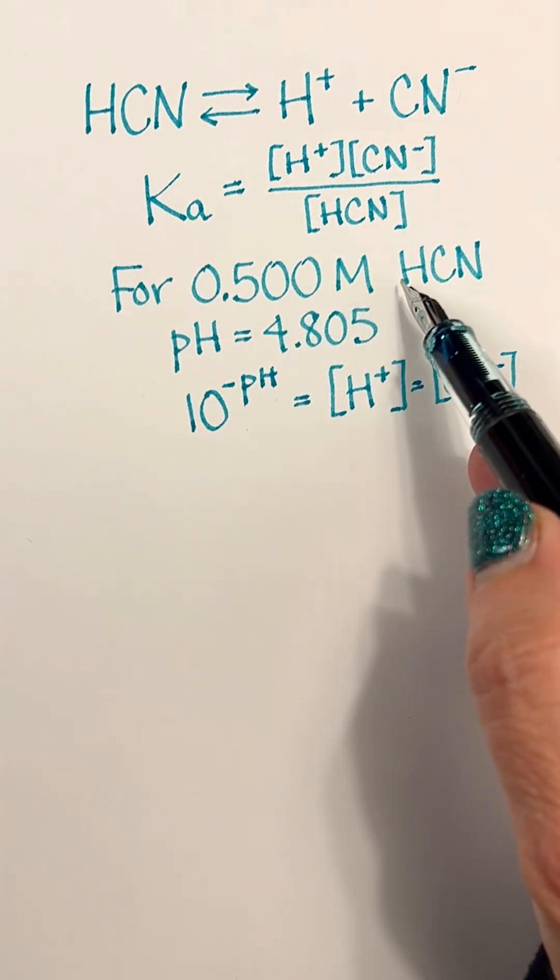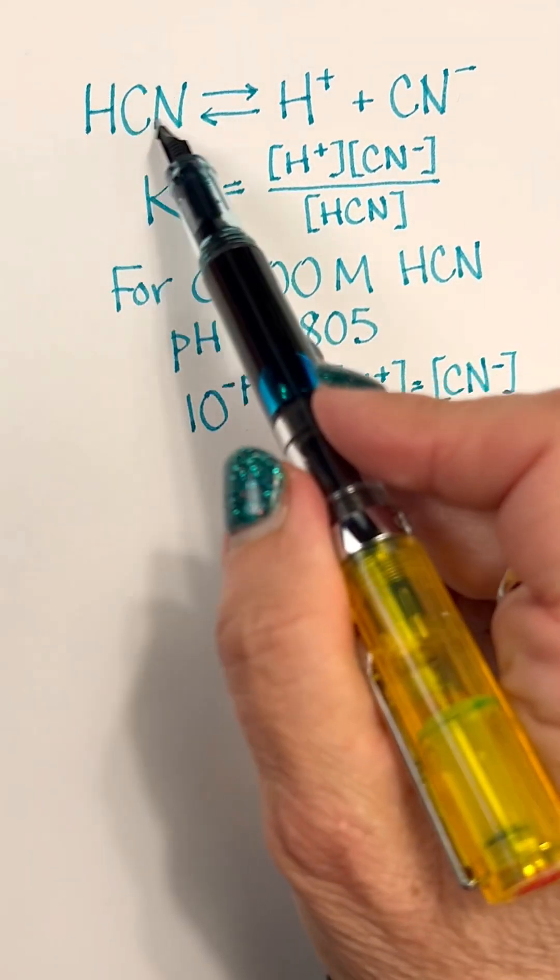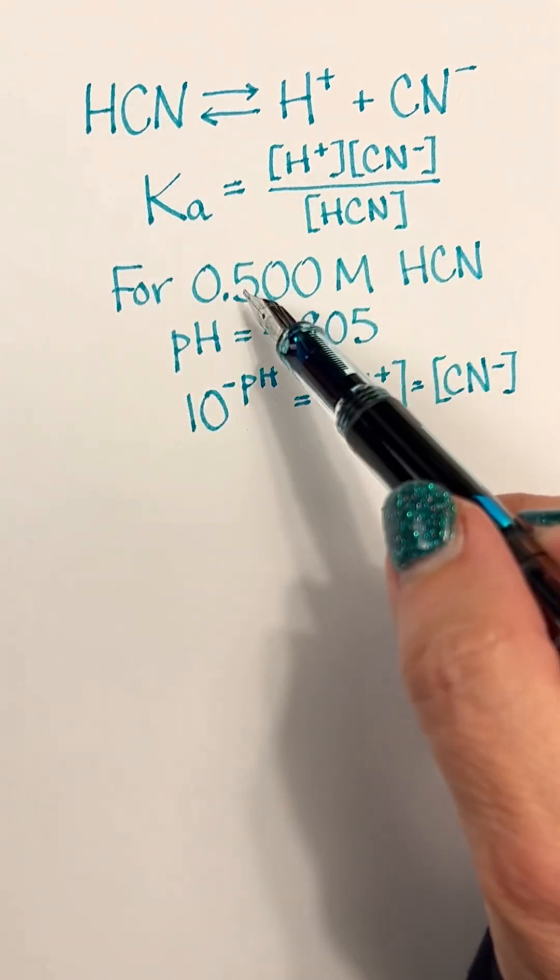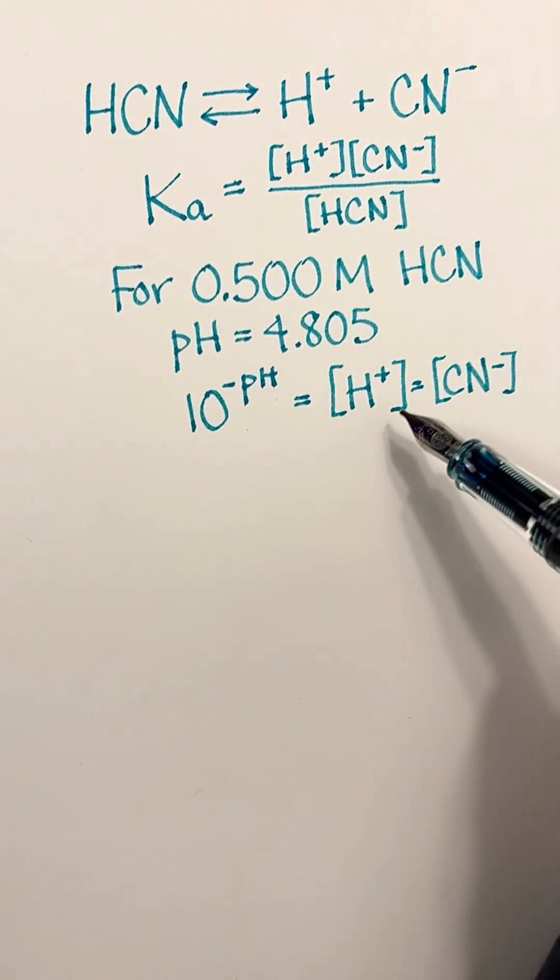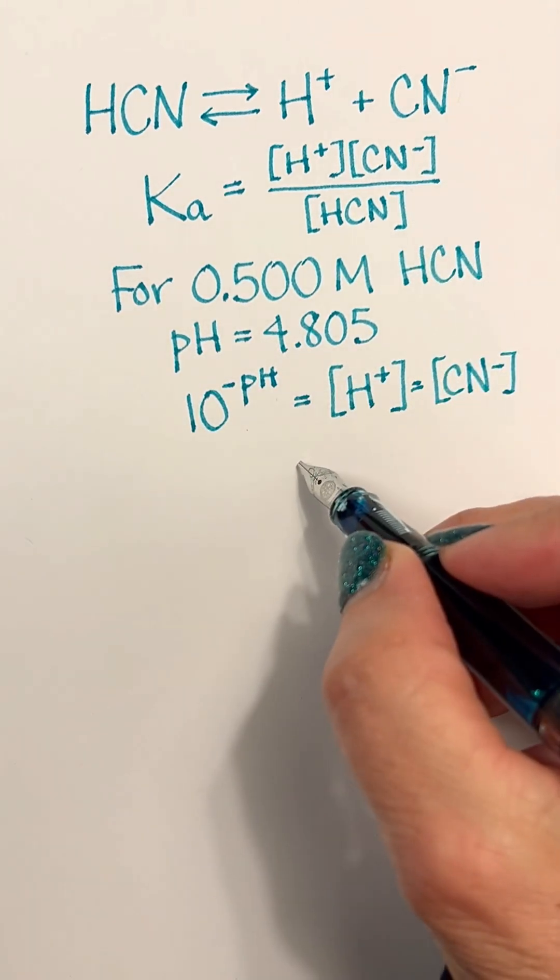0.500 molar of the acid to start with did get reduced ever so slightly, but not very much because this value is quite small.